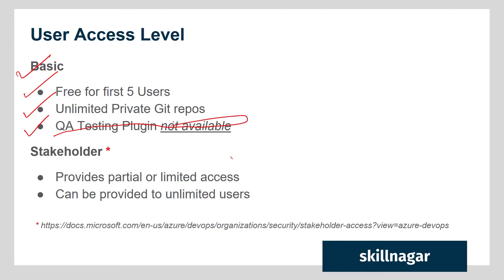Then we have the Stakeholder level, which provides limited access and can be provided to an unlimited number of users. A stakeholder is someone who is not responsible for day-to-day activities in the project, but whose work may be dependent on it — so they have limited, customizable access. I recommend visiting the provided link to understand the stakeholder account, as it is usually not used in most companies I've consulted with.